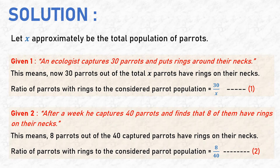It is also given that after a week, he captures 40 parrots and finds that 8 of them have rings on their necks. This means that 8 parrots out of the 40 captured parrots have rings. Therefore, the ratio of parrots with rings to the considered parrot population equals 8 by 40. Let this be Ratio 2.